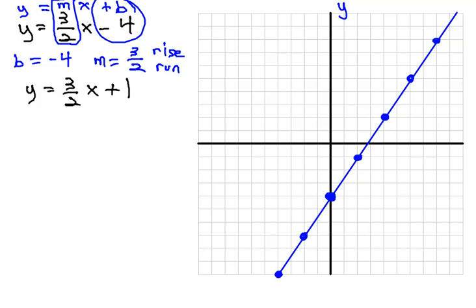And similarly with the other equation, it's in the y equals mx plus b form also. When we see 3 halves x plus 1, we know 1 is the y intercept, and 3 halves is the slope.